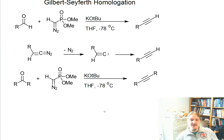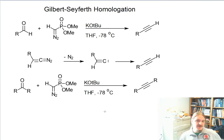A second kind of reaction is called the Gilbert-Seyferth homologation. The Gilbert-Seyferth homologation likewise has an aldehyde and a ketone version, but because of the way this reaction works, it's not possible to go any farther than the terminal alkyne if you do the aldehyde version.